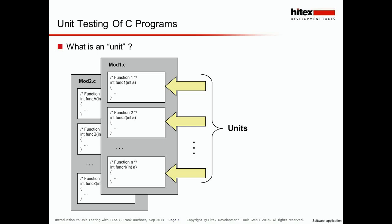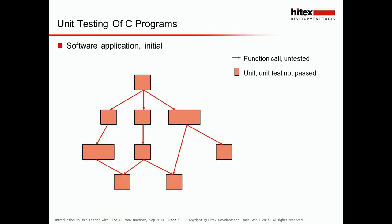If we know that our test objects are the functions in the sense of C, we can depict a complete test software application. The red building blocks denote the functions or our test objects — the units under test — and the red arrows give the calling hierarchy. If we would like to answer what unit testing means for such a unit, we pick a unit that is in a hierarchy, meaning it has a calling unit above and calls itself another unit. This is answered on the next slide.